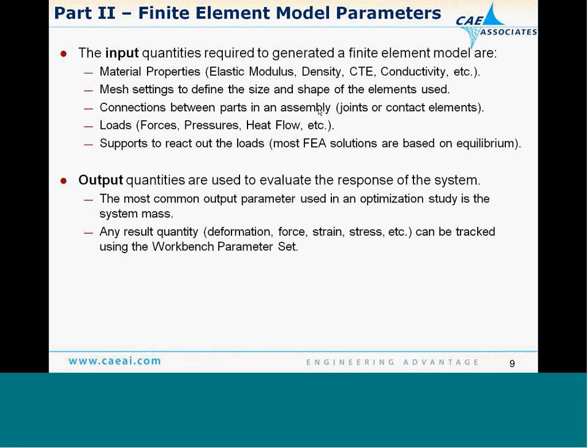When we talk about output quantities, we're evaluating the response of the system with respect to changes in those inputs. The most common output parameter in an optimization study is system mass, which we typically try to minimize. But any result quantity — deformation, stress, strain, or probe results — can be tracked using the Workbench parameter set.